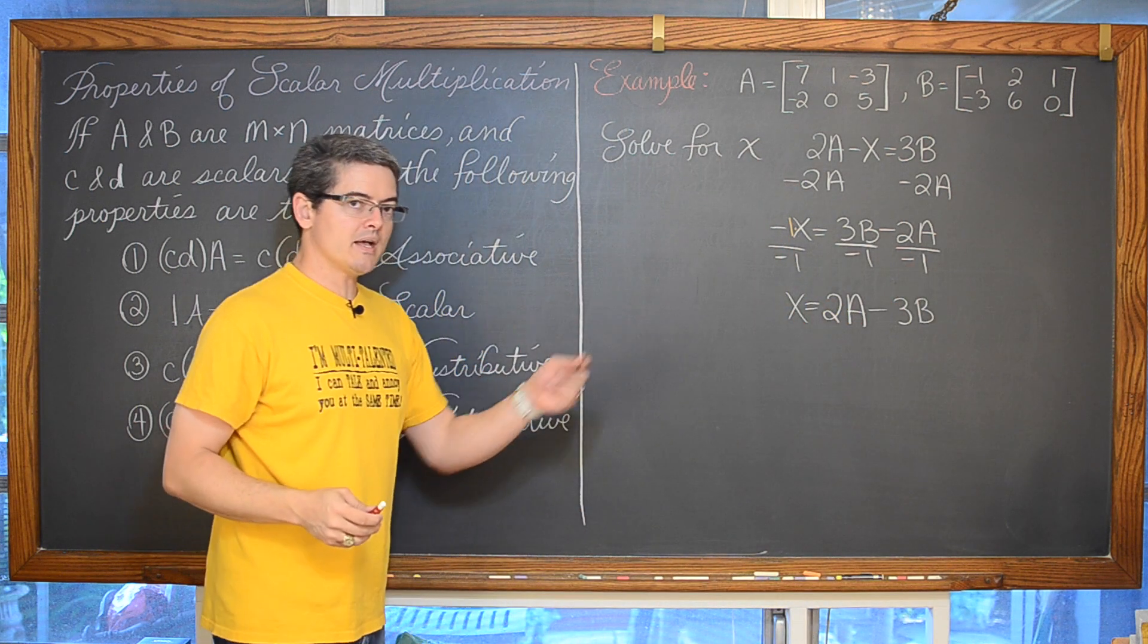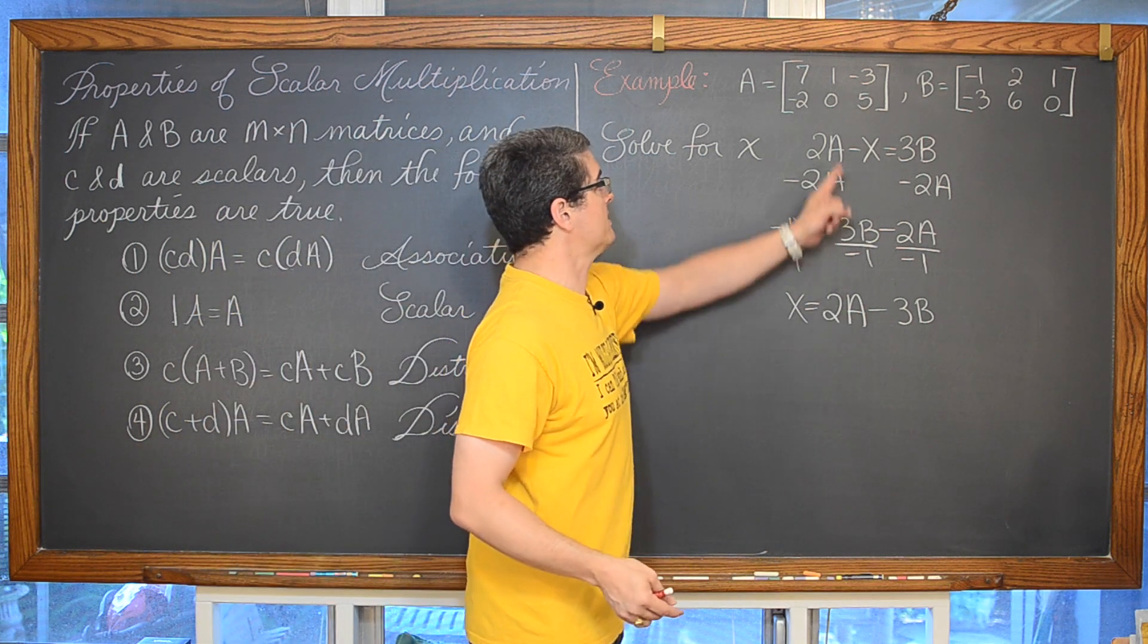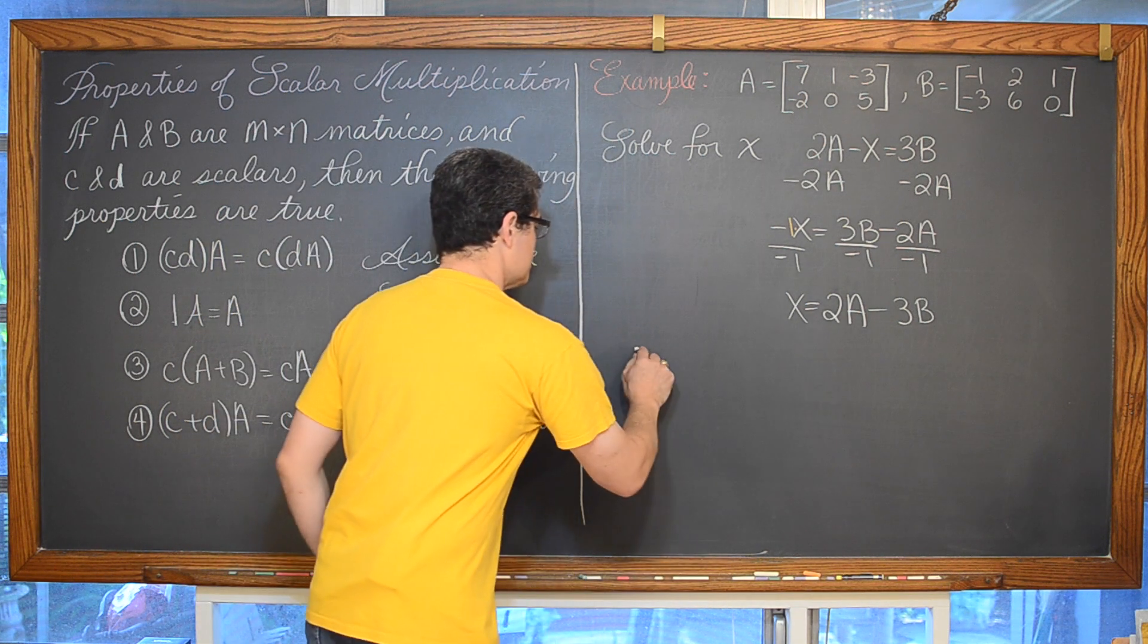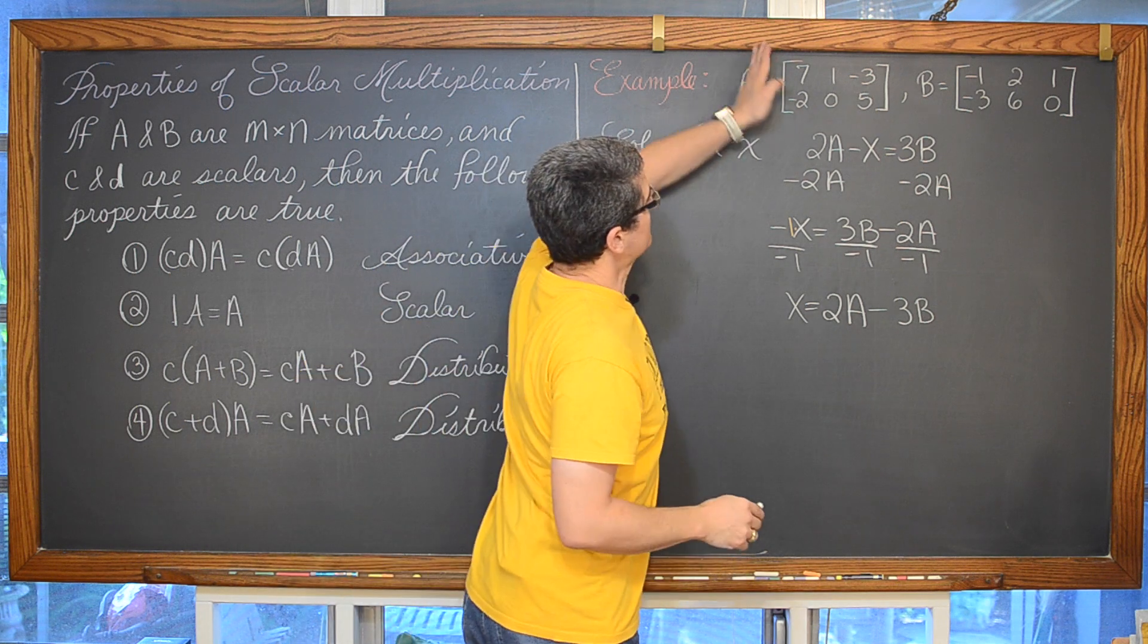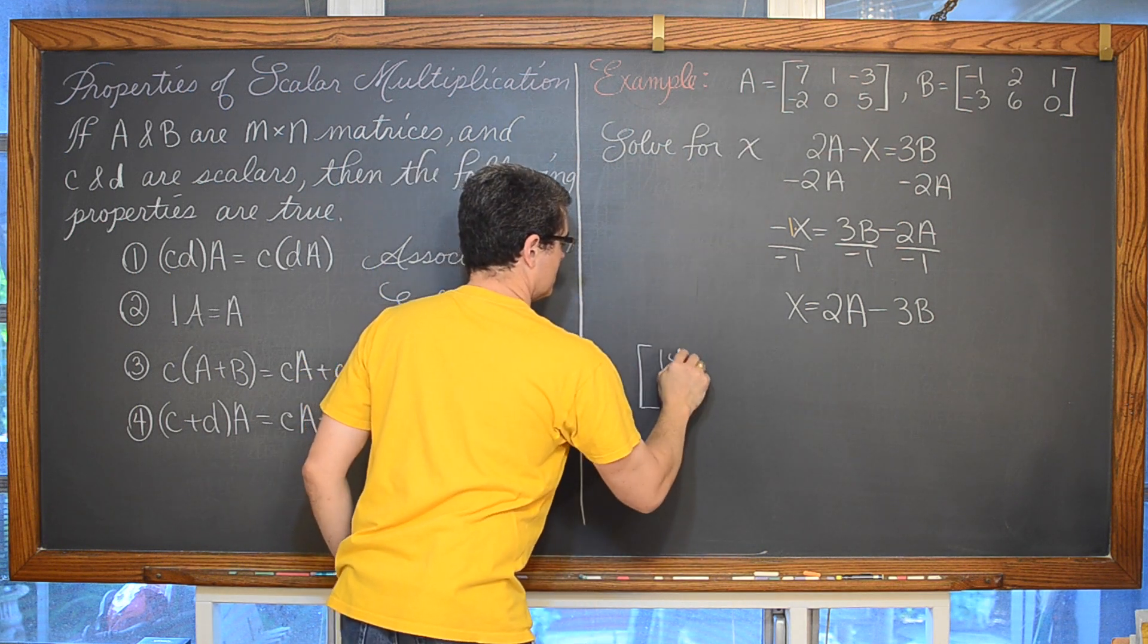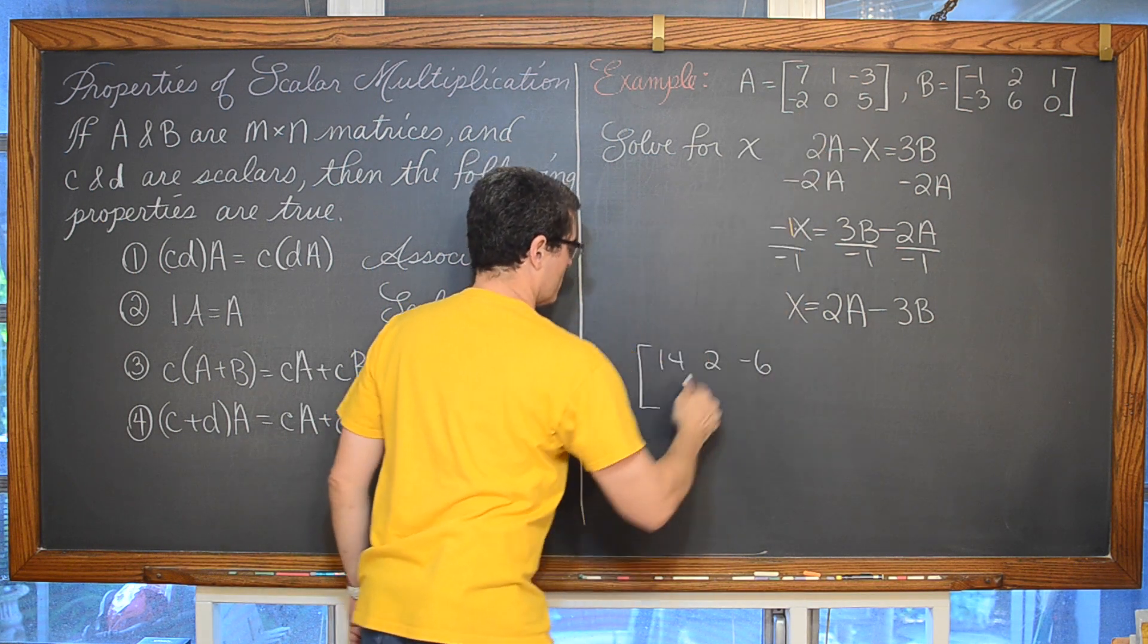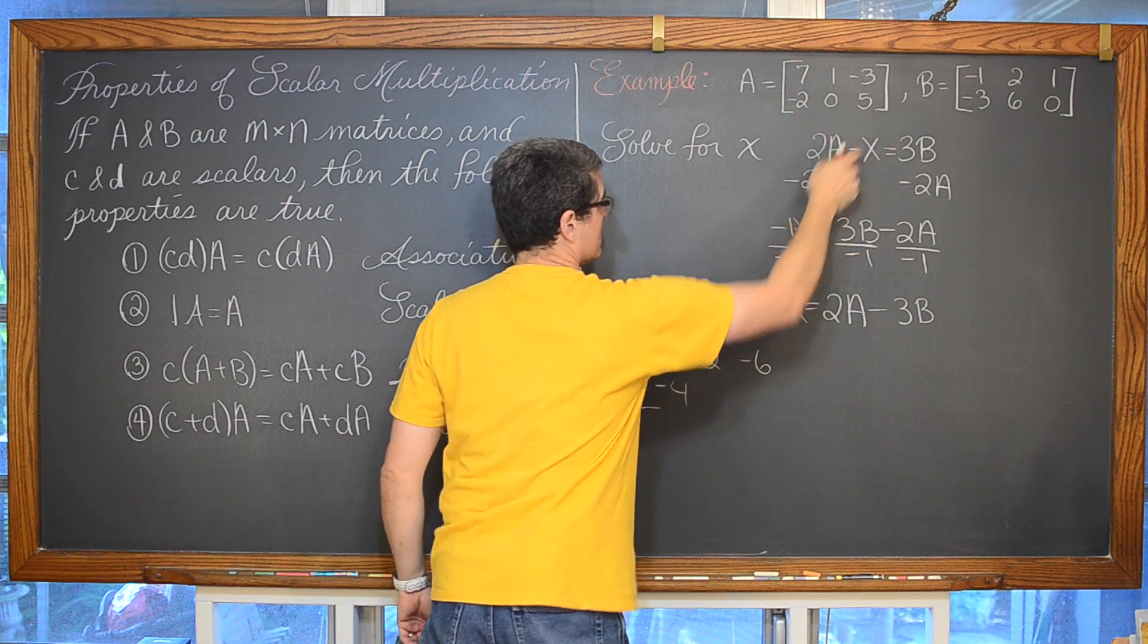So matrix X is what you get when you take the scalar multiple of 2 and apply it to matrix A. So we are going to have 2 times each one of these. So we are going to have 14, 2, and negative 6. And negative 4, 0, and 10.